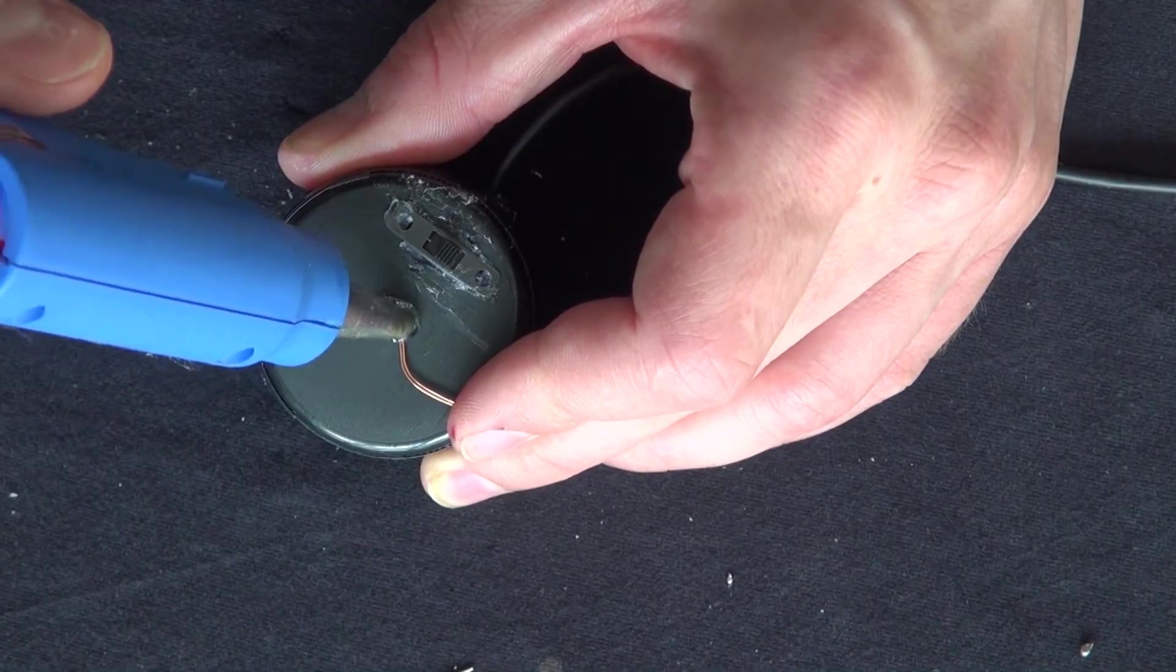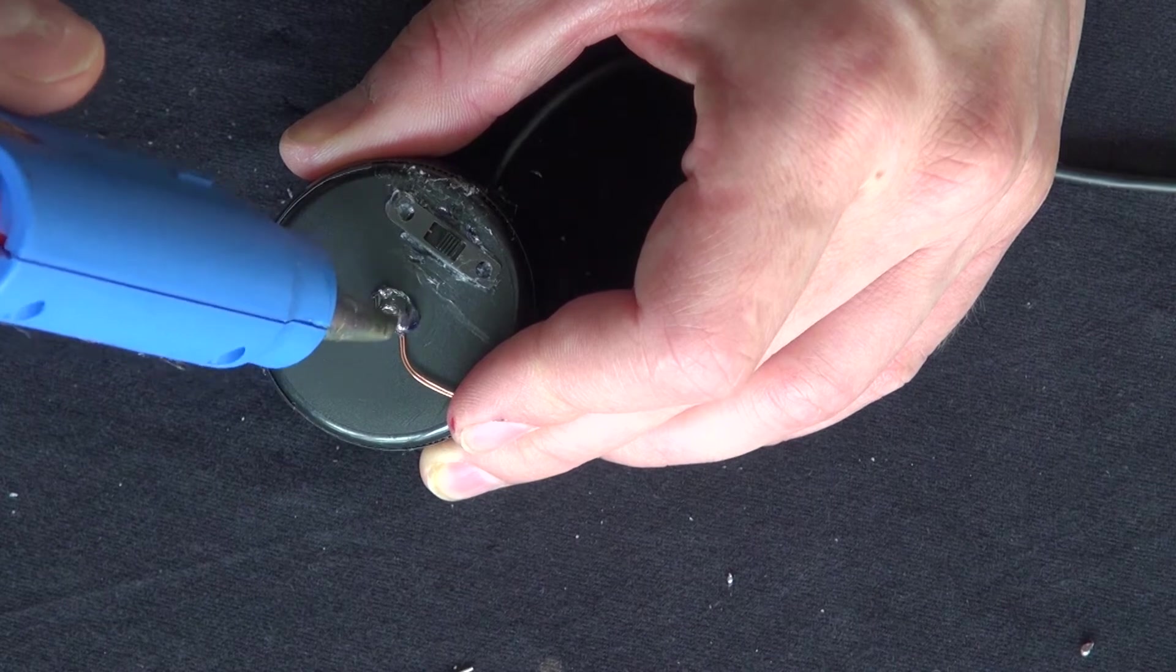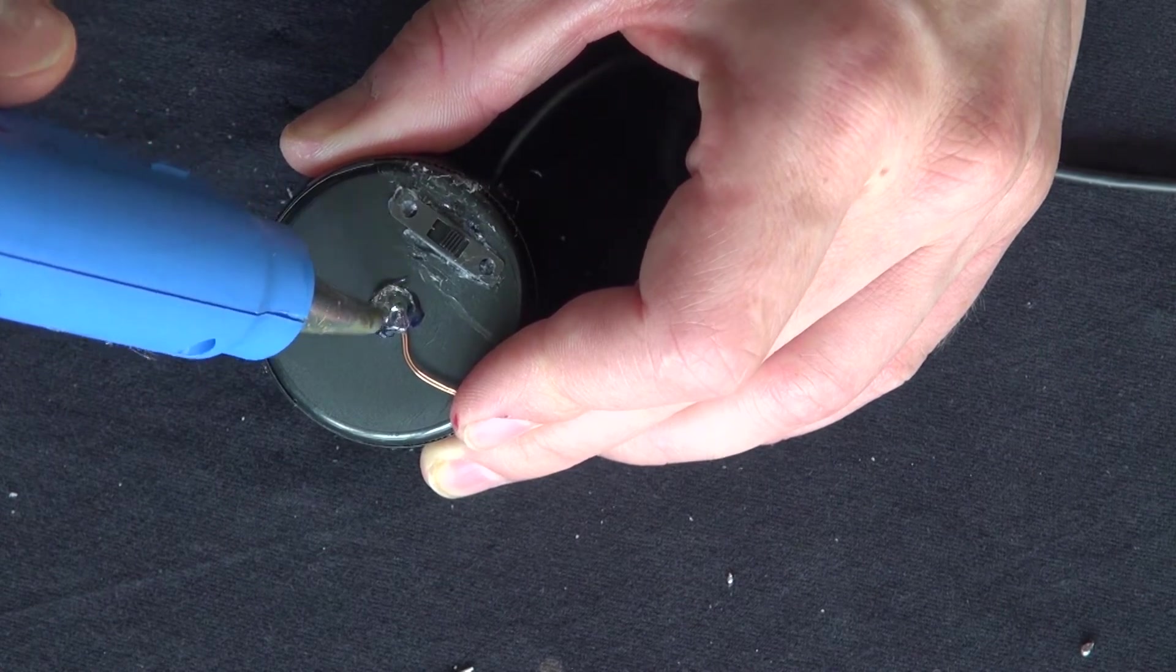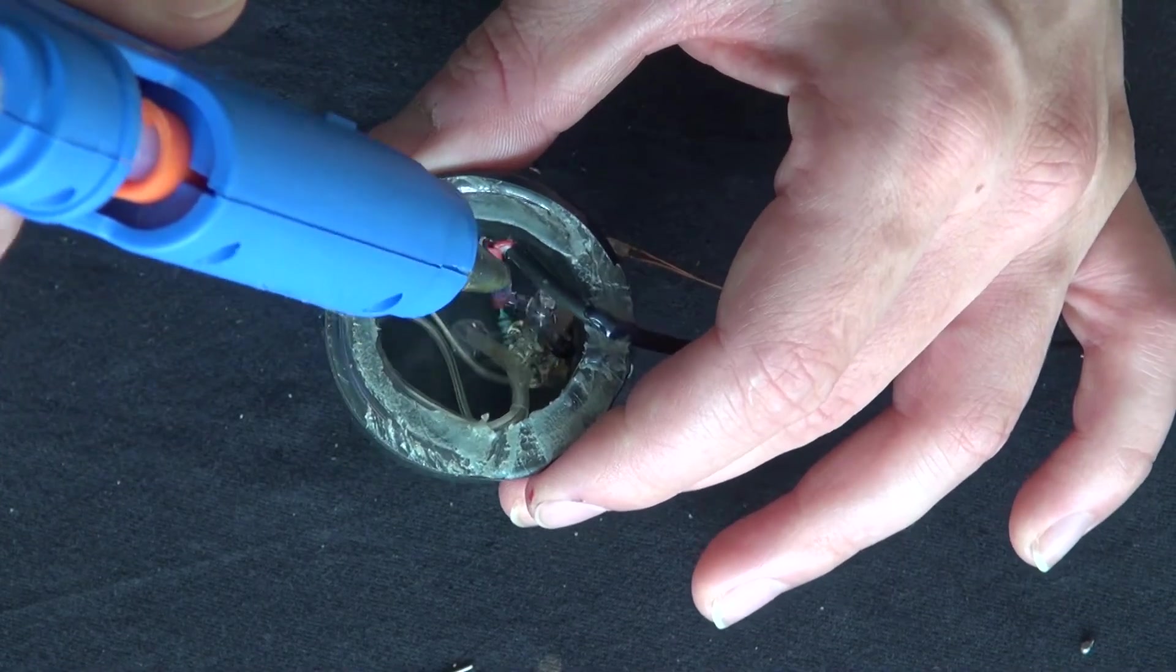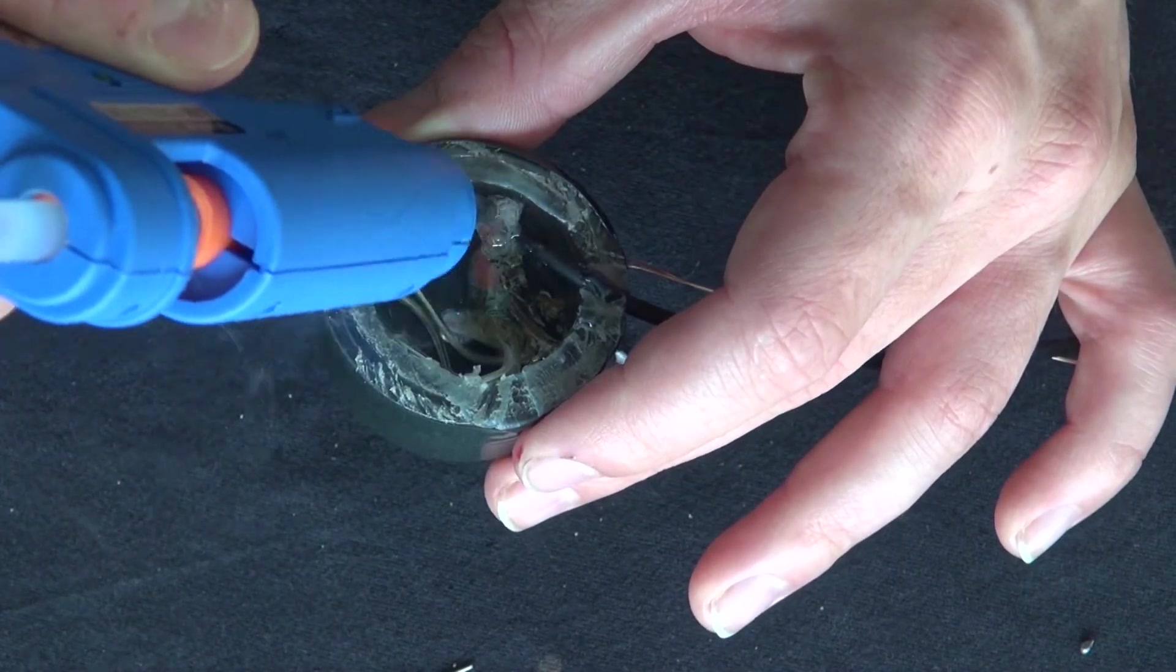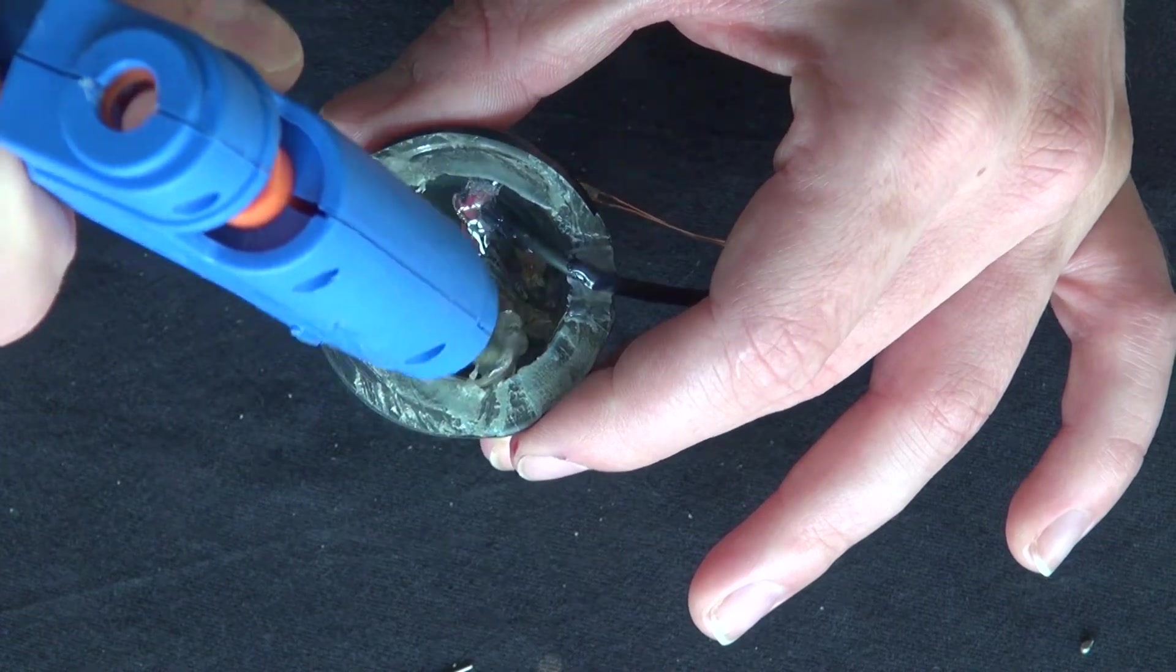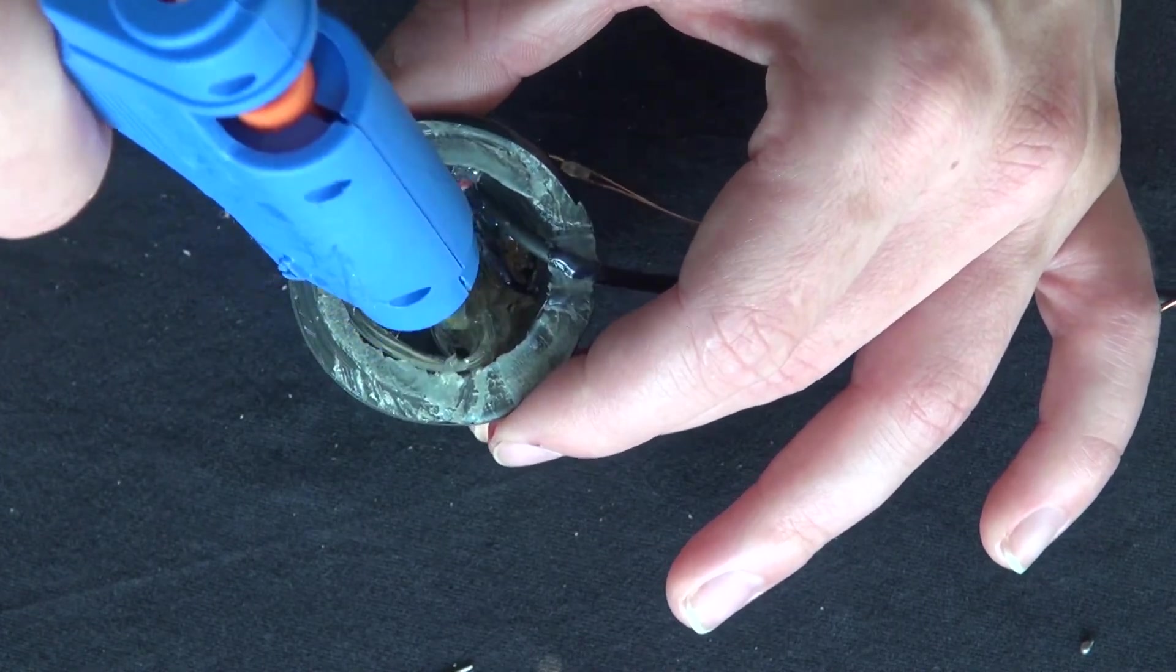Now I'm going to glue that hole so that way the wire doesn't slip back through. Now I'm going to go and put glue on everything inside to keep everything into place so it doesn't move and keeps everything insulated as well.